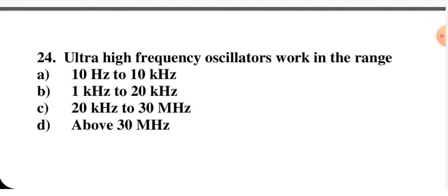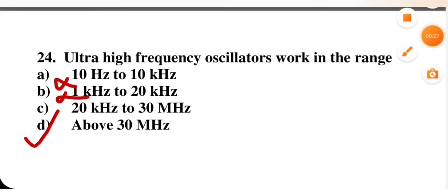UHF oscillators work in the range — 10 Hz to 10 kHz, 1 kHz to 20 kHz, 20 kHz to 30 MHz, or above 30 MHz? Since we are talking about ultra high frequency, the kilohertz options are wrong. The correct option is above 30 MHz.